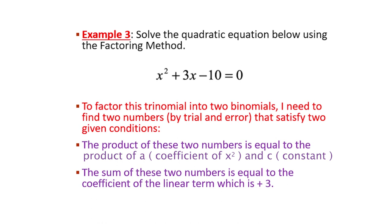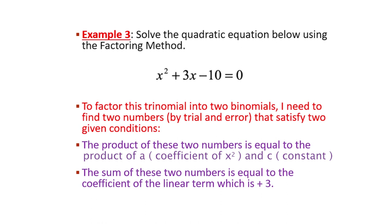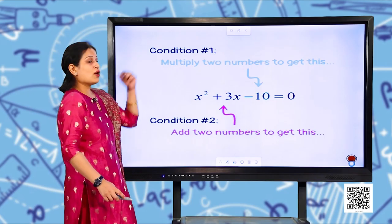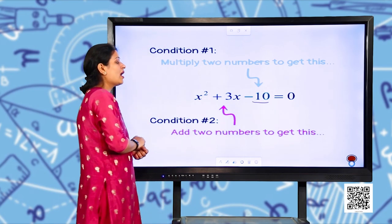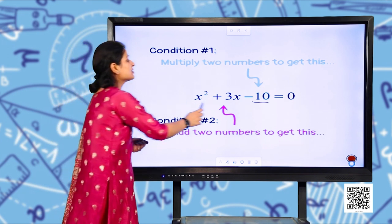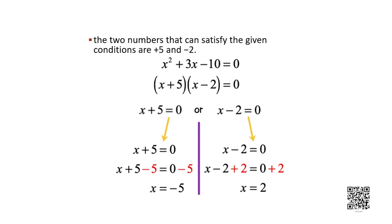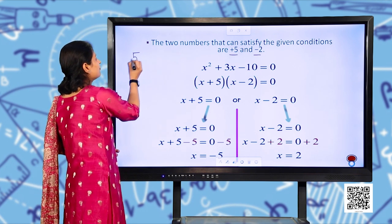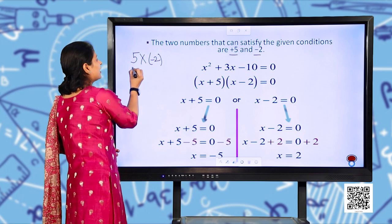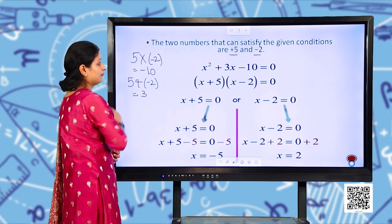Since the sum must be positive 3, the larger number should be positive. The two numbers that satisfy both conditions are +5 and −2. When you multiply 5 by −2, you get −10. When you add 5 and −2, you get 3. Both conditions are satisfied.